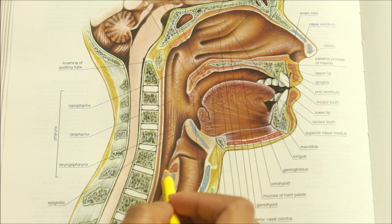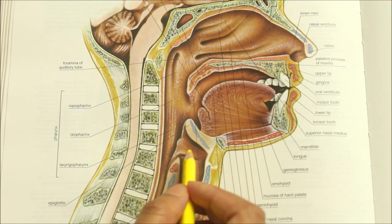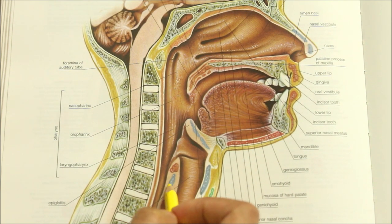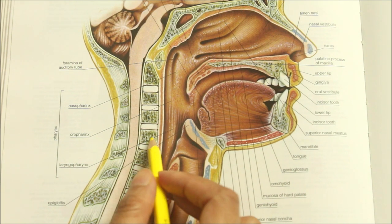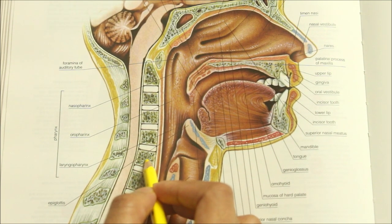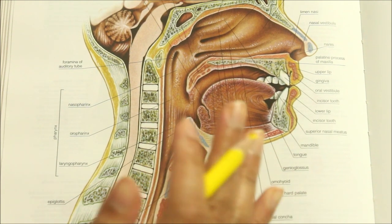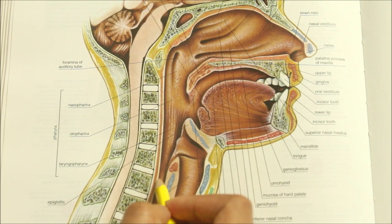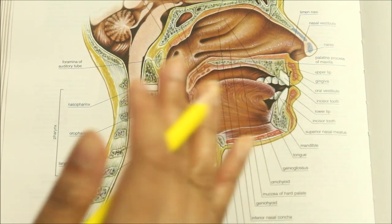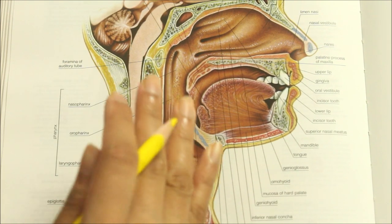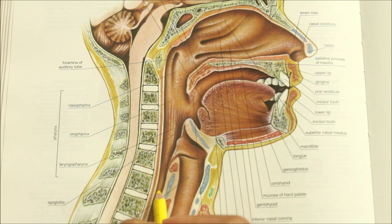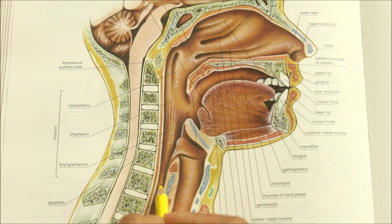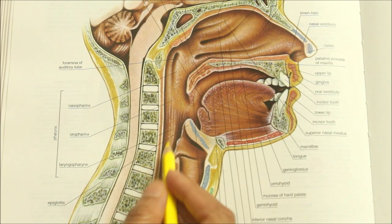Looking at the relations of the laryngopharynx: anteriorly it is related to the inlet of the larynx, the posterior surface of the cricoid cartilage and the arytenoid cartilage; posteriorly it is related to the 4th and 5th cervical vertebra; and the lateral wall is related to the piriform fossa on each side of the inlet of the larynx, bounded by the aryepiglottic fold medially and the thyroid cartilage laterally. The laryngopharynx is lined by stratified squamous non-keratinized epithelium, and its function is passage for food.